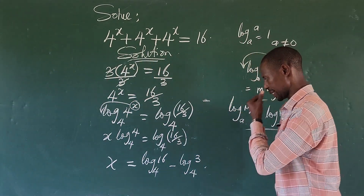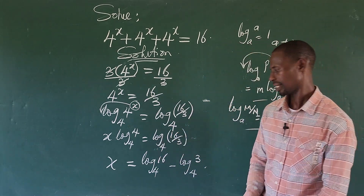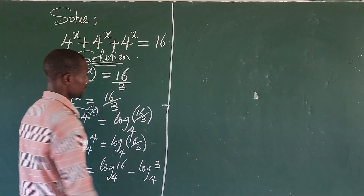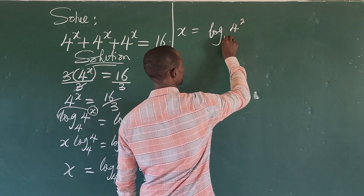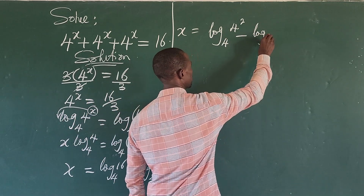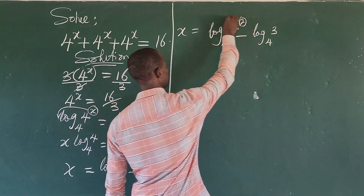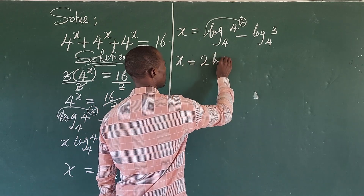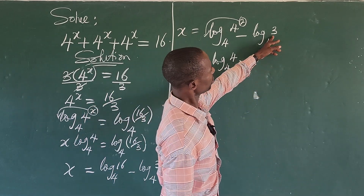We can express 16 as 4 to the power of 2 — we all know that. So continuing on this side, x equals log base 4 of 4 squared minus log base 4 of 3. Like the exponent law we looked at before, move the exponent to this side, so we have x equals 2 times log base 4 of 4 minus log base 4 of 3.